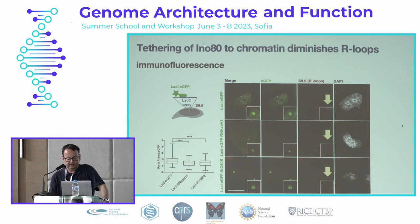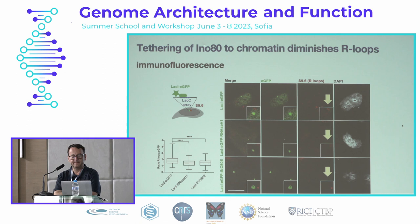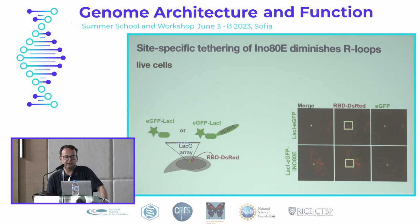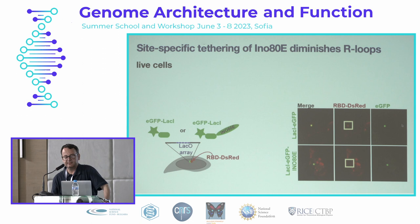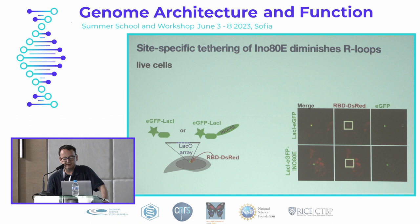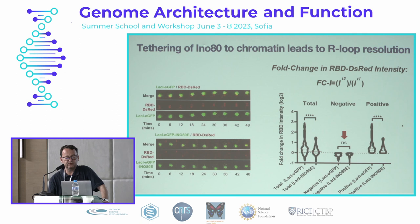Next we decided to see what happens if you tether INO80 to chromatin using a cell line with an integrated array of lacO sites. We observed by immunofluorescence that the array was a site of R-loop formation, but the S9.6 signal was reduced upon tethering of RNase H1 or INO80 there. We then used a variation of the system for live cell imaging, employing a fusion construct of the RNA-binding domain of RNase H1 fused to DS-RED — something we copied from a paper by Andres Aguilera — and observed that the array in live cells accumulated the RBD-DS-RED signal. We employed this system to follow the dynamics of R-loop formation at the array.